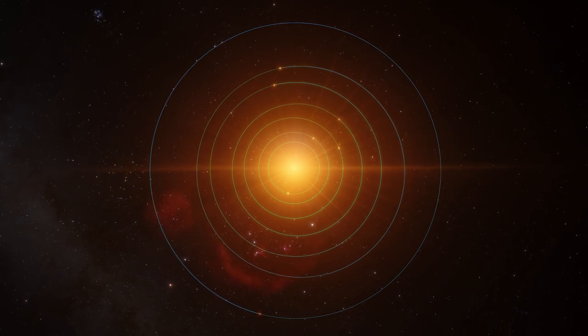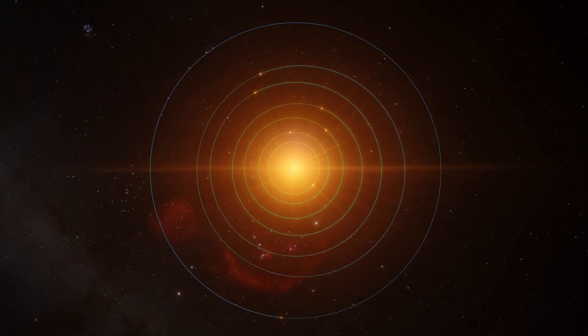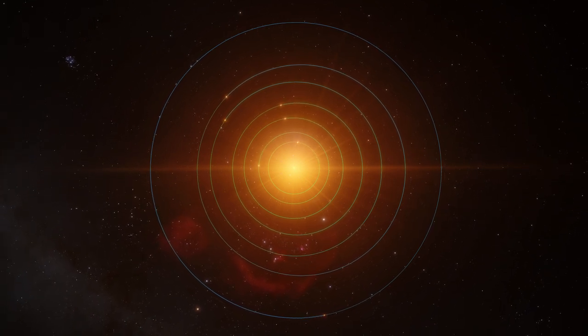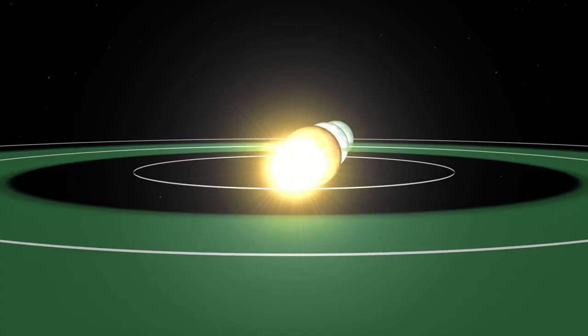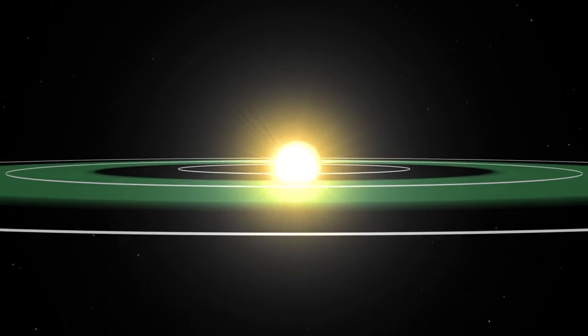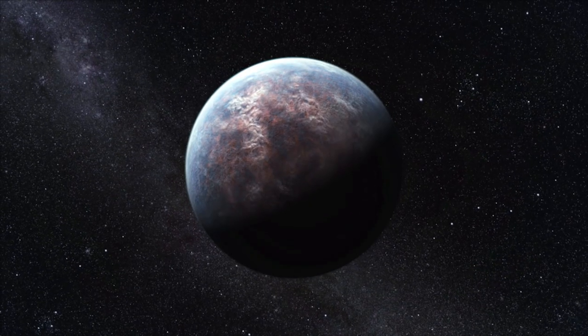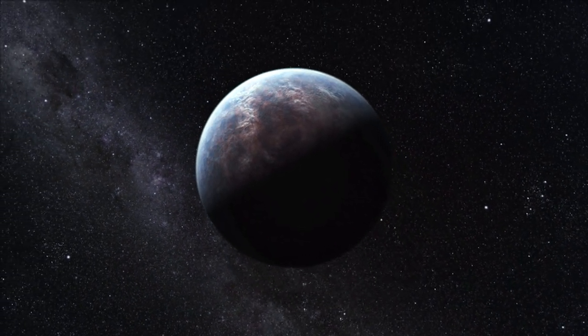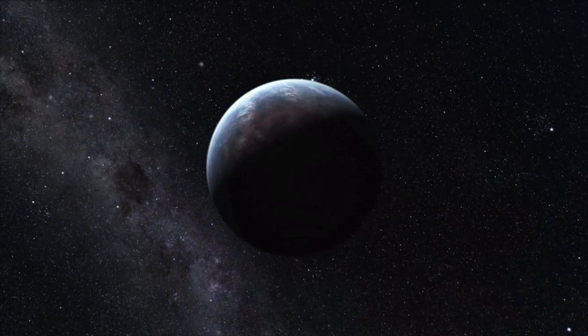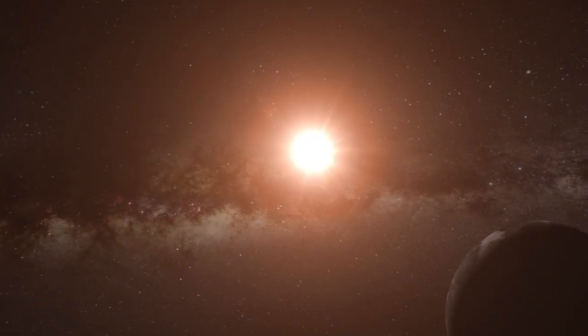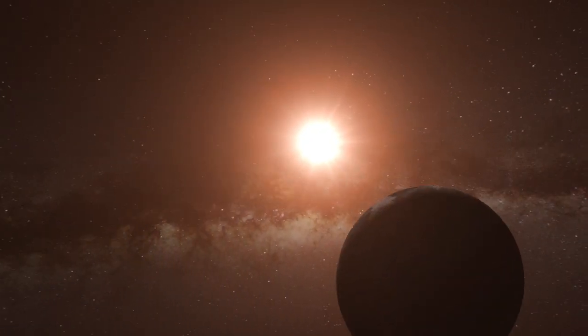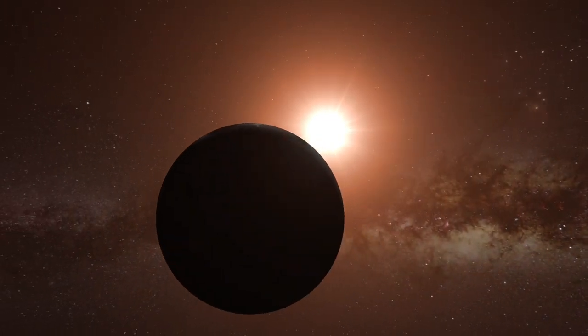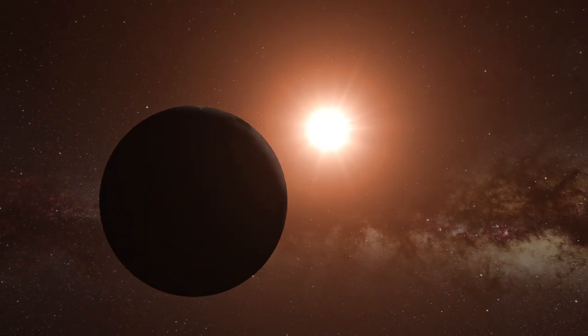However, this method has limits. Transits only happen if a planet's orbit actually crosses between its host star and Earth, so its orbit must be edge-on towards us. This is the case for just a small fraction of planetary systems. Where they do occur, transits happen infrequently and last for a relatively short time, so chance observations are unlikely.